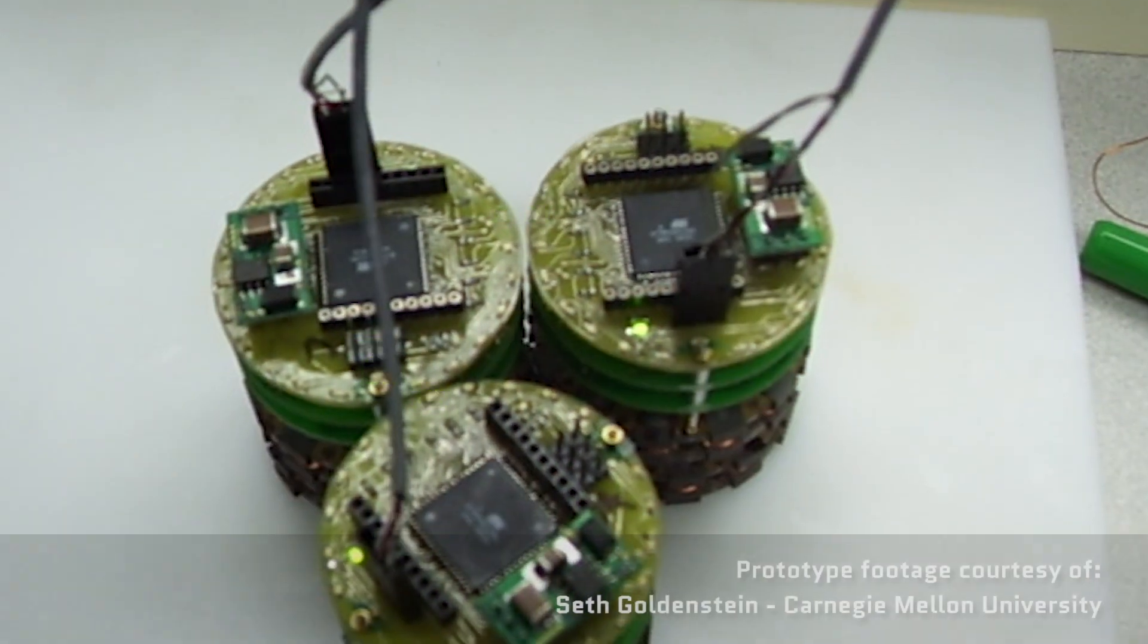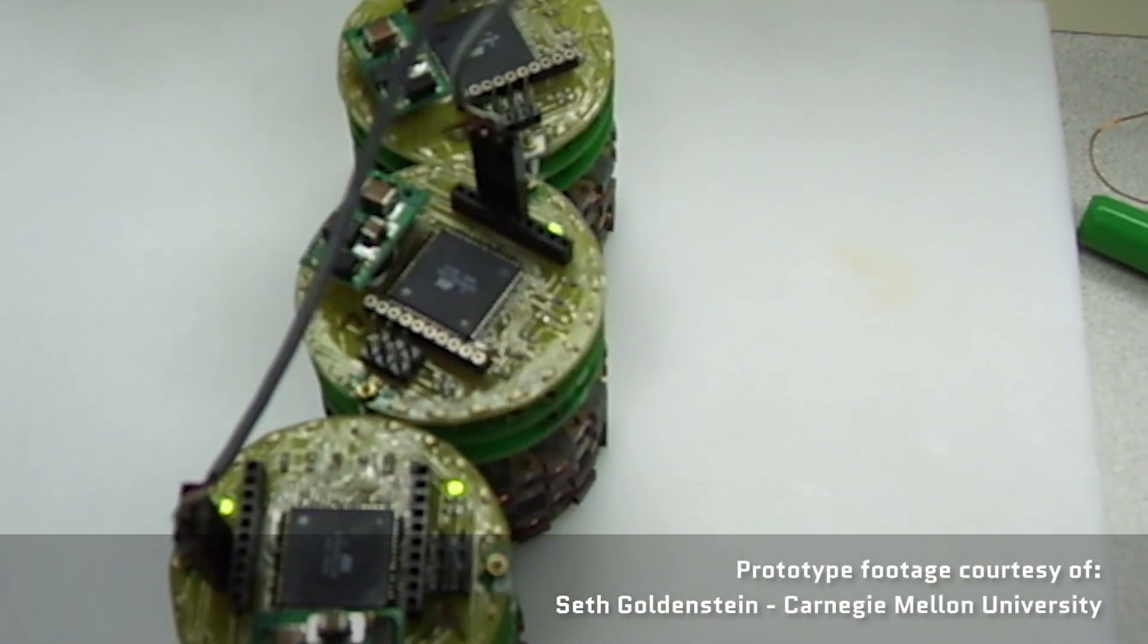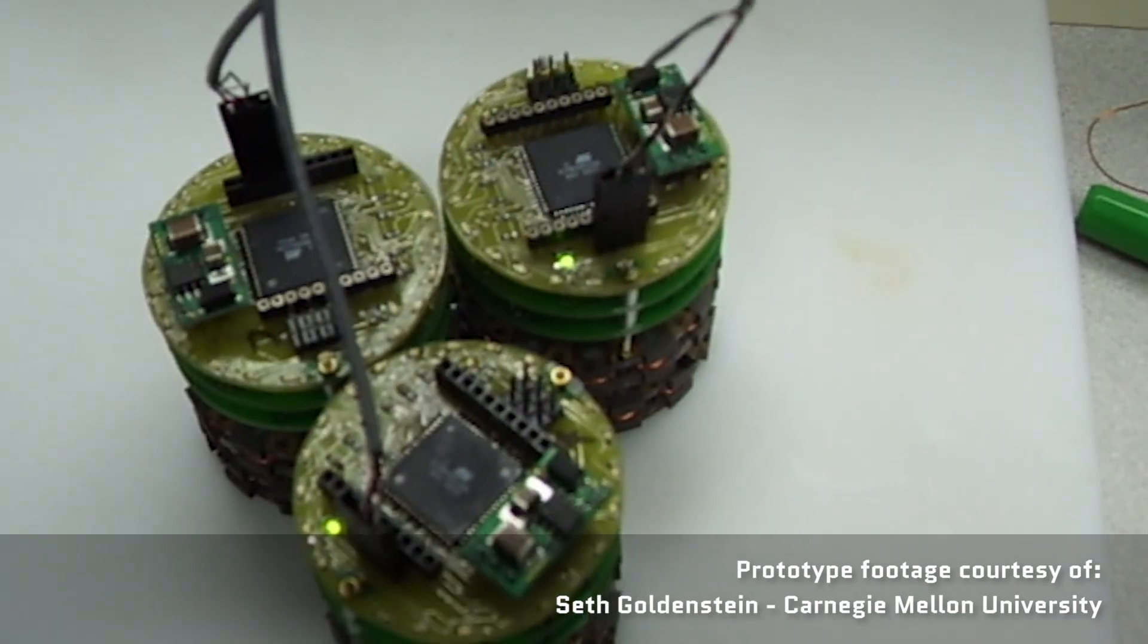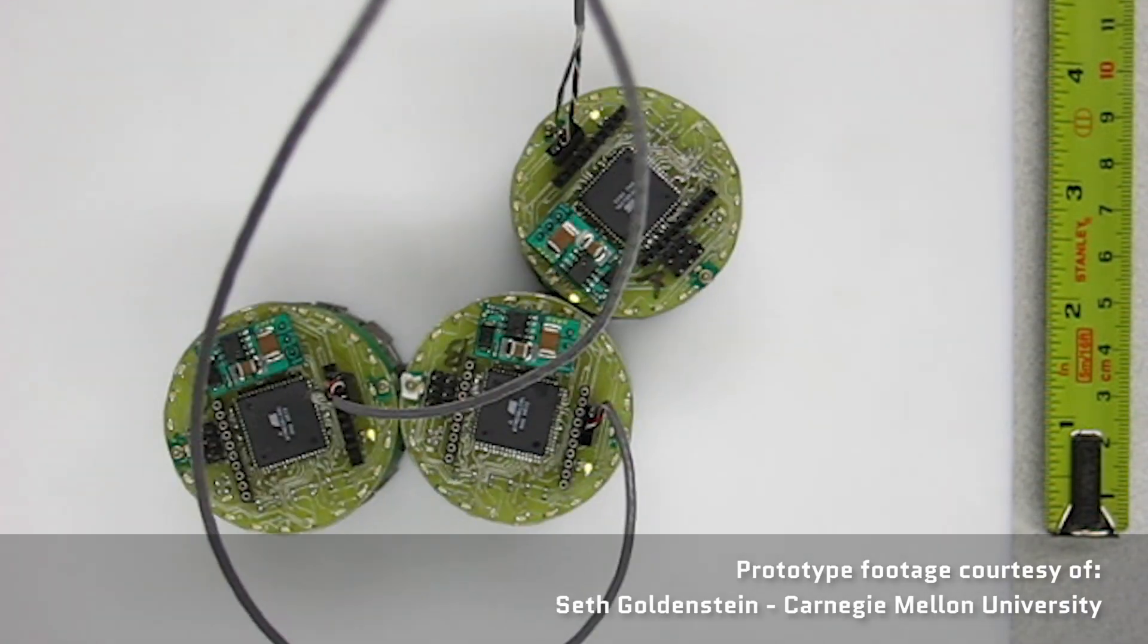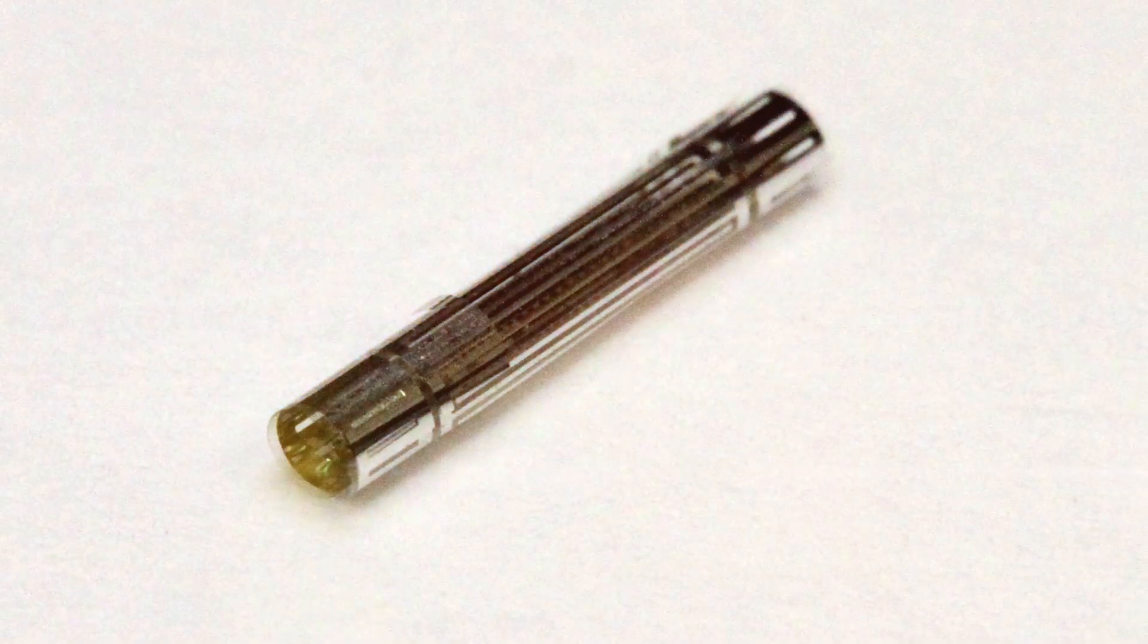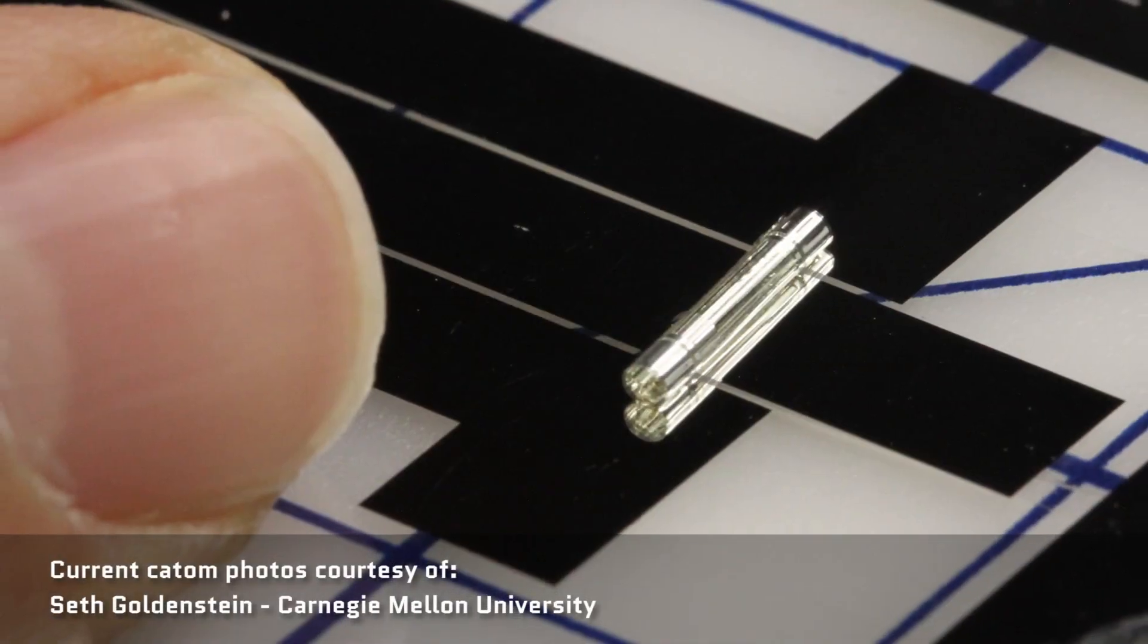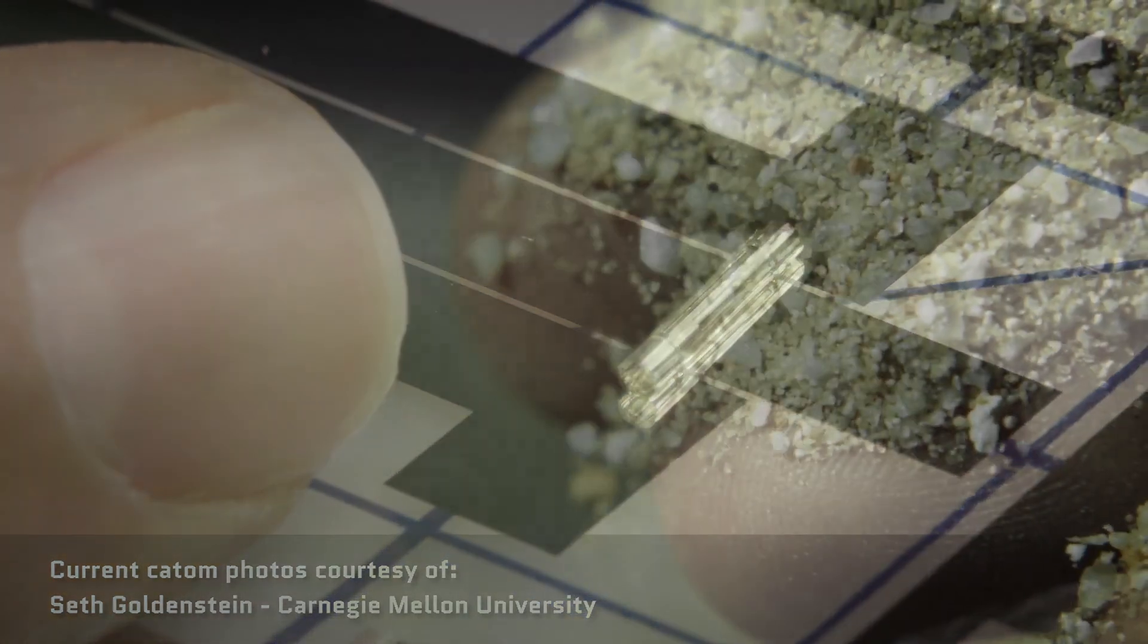Several years ago, Carnegie Mellon researchers built catom cylindrical prototypes that were 44 millimeters in diameter. These things were able to move around on a two-dimensional plane, pushing and pulling against each other using electromagnets. In the future, we want to see even smaller catoms. Maybe just a millimeter in size. Or the size of a grain of sand. Or maybe even smaller than that.